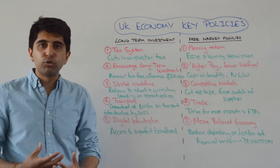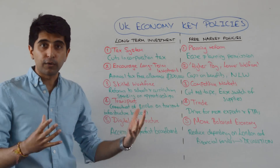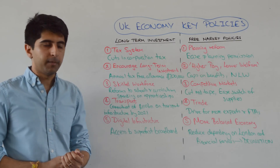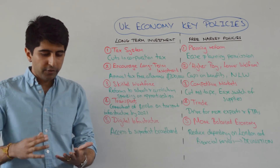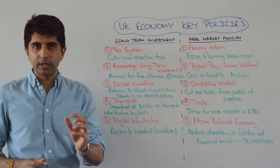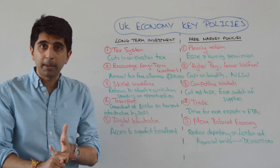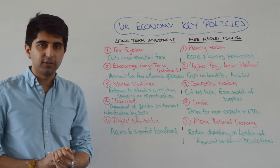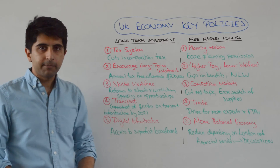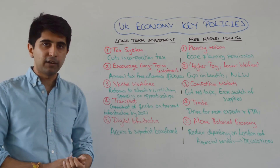Policies to improve the skills of the workforce and make it more flexible include reforming the school curriculum at primary and secondary level, and big moves to encourage more apprenticeships. Transport-related policies are big right now — the UK government has committed to spending up to £110 billion on transport infrastructure by 2021, including high-speed rail, airport capacity, and roads. The UK government is also committed to improving digital infrastructure, allowing individuals and businesses to access superfast broadband and 4G networks.